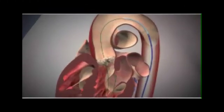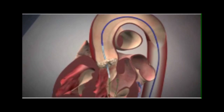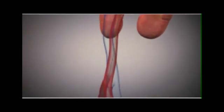Once we've crossed with the wire we can track a balloon and position it in place within the valve that's severely narrowed, and we can inflate the balloon thereby dilating the valve and creating more room for our later implantation.